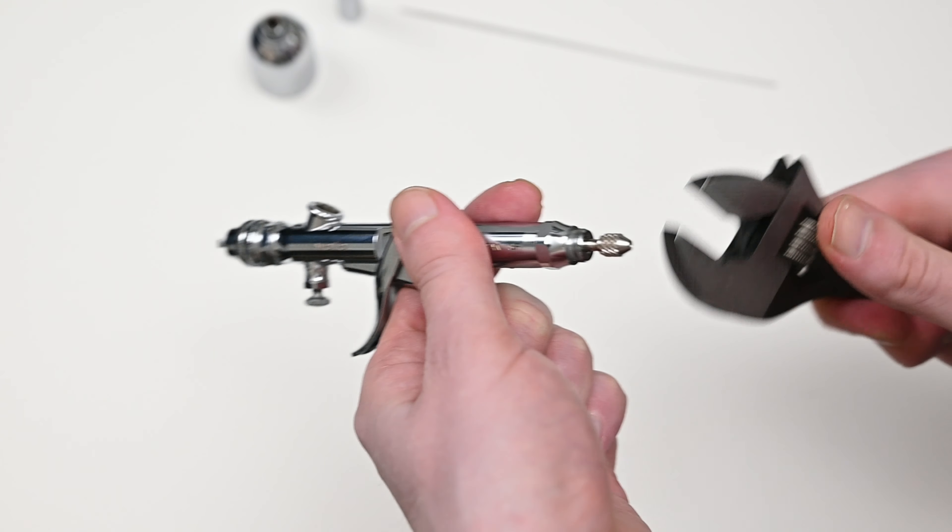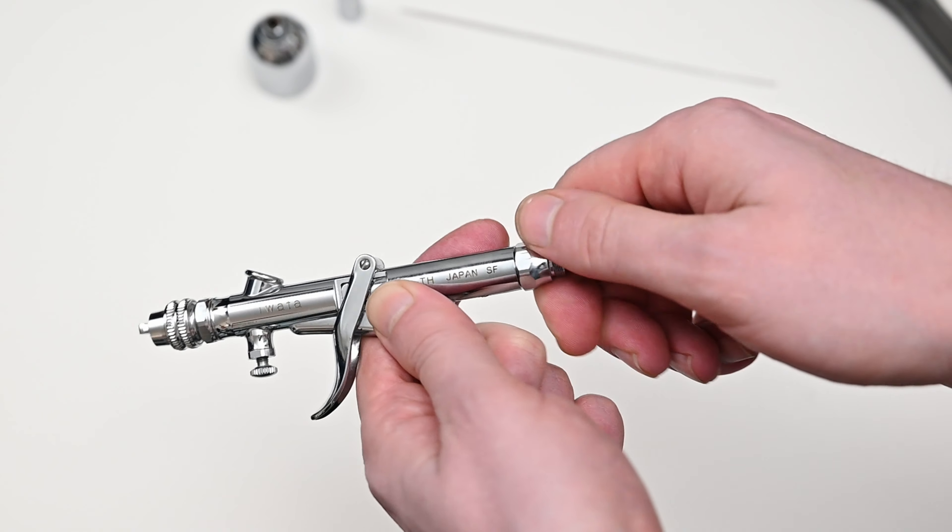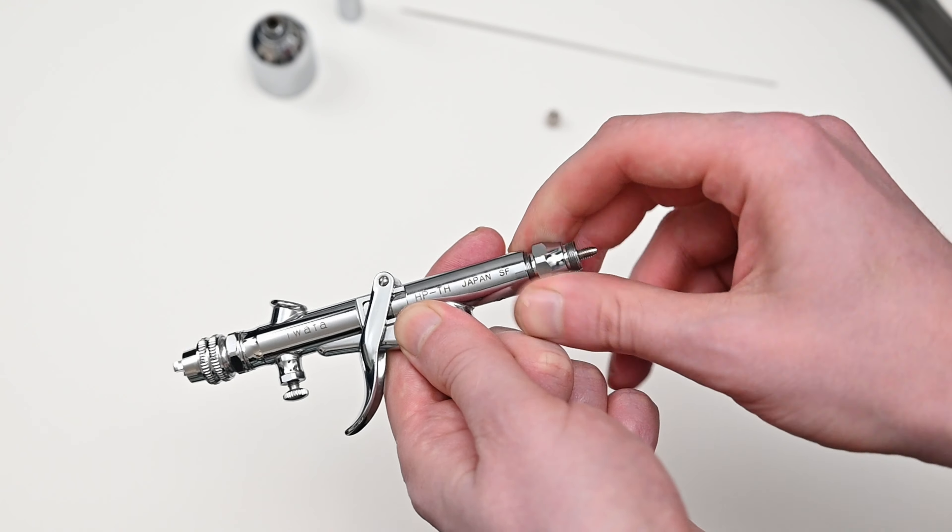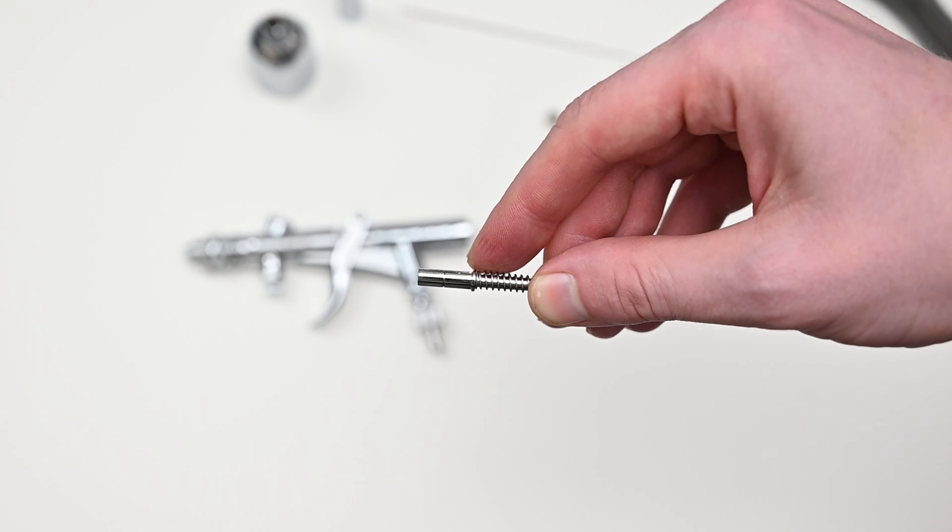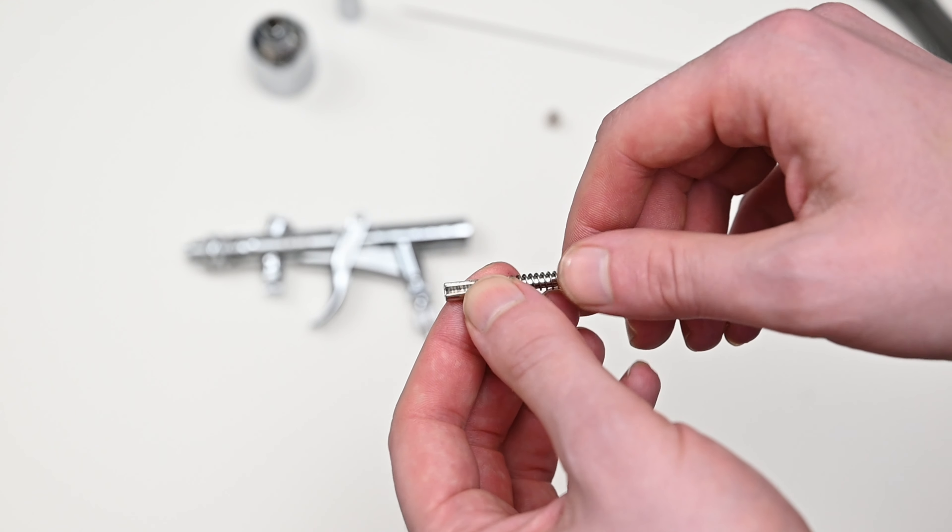This is very similar to what you'd see from an HVLP spray gun. The best way to remove the spring assembly is with an adjustable wrench like I'm doing here. Unfortunately you're not able to adjust the trigger tension with this screw like you are with many other airbrushes.